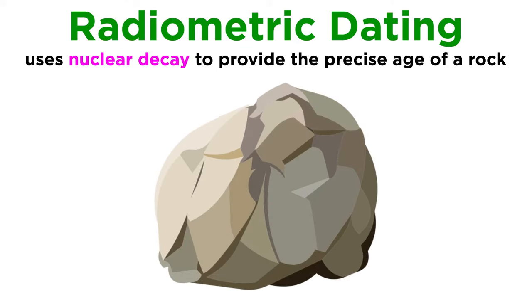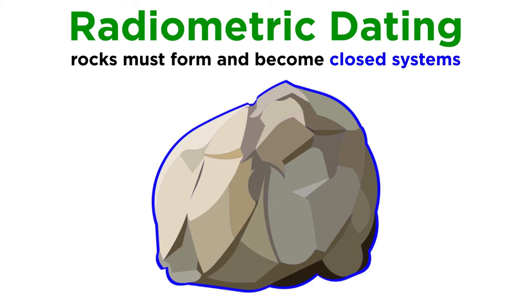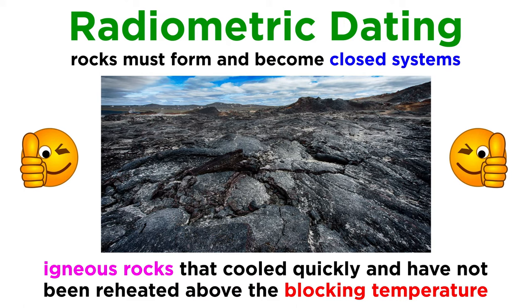In order for radiometric dating to be applicable, certain prerequisite criteria must be met. Rocks must form and then become closed systems, where there is no exchange of atoms between the rock and its environment. The best rocks with which to use radiometric dating are igneous rocks that cooled quickly and have not been reheated above the blocking temperature, which is the temperature at which parent and daughter isotopes can be lost to the environment.